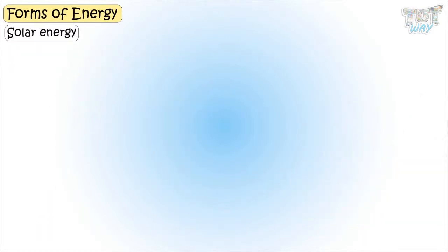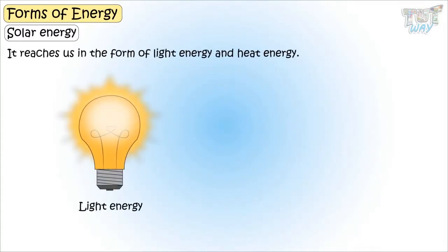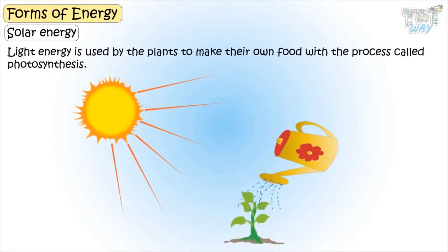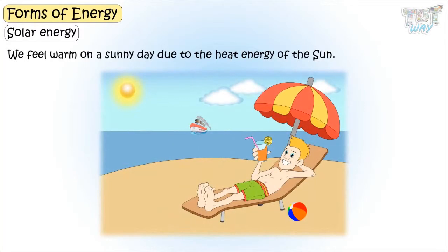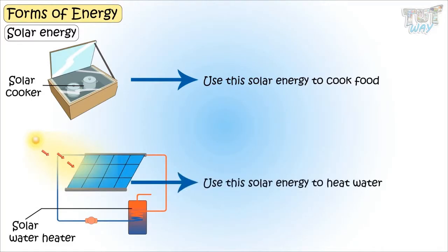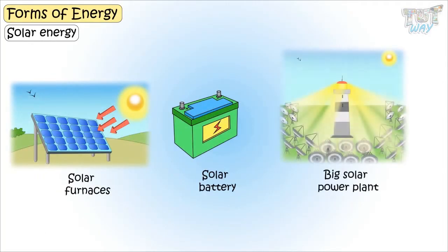Now let's learn about solar energy. The energy produced by the sun is called solar energy. It reaches us in the form of light energy and heat energy. Light energy is used by the plants to make their own food with the process called photosynthesis. We feel warm on a sunny day due to the heat energy of the sun. Solar cookers use this solar energy to cook food. Solar water heaters use this solar energy to heat water. Solar furnaces, solar batteries, big solar power plants all use the solar energy in order to work.